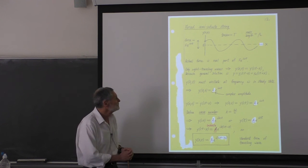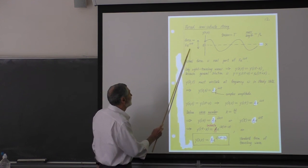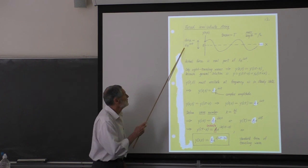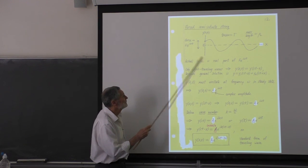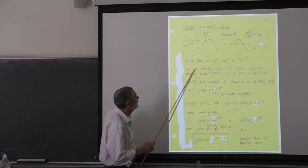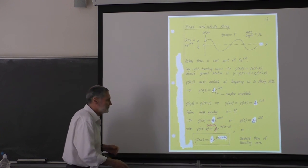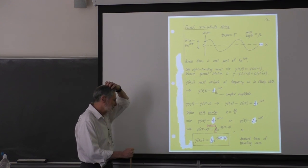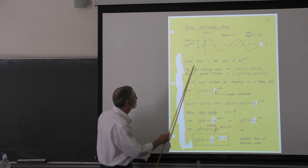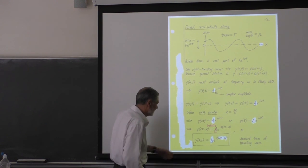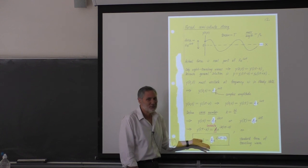Of course, we don't even think about it anymore — the actual force is the real part of this, which will be F times the cosine of omega t. It's very convenient to use complex numbers and then take the real part at the end. Or maybe we won't — you can see I didn't do that here, but it's understood.